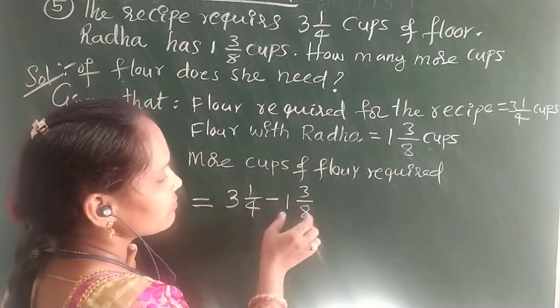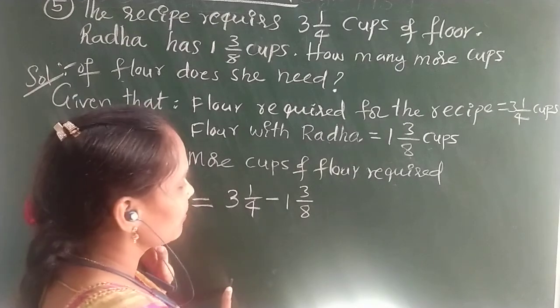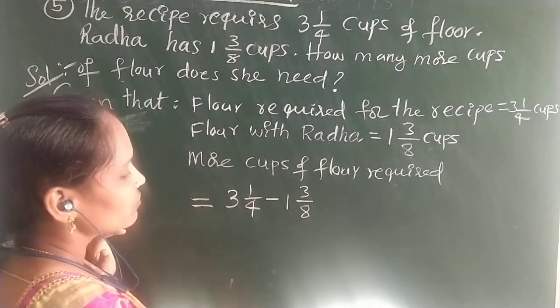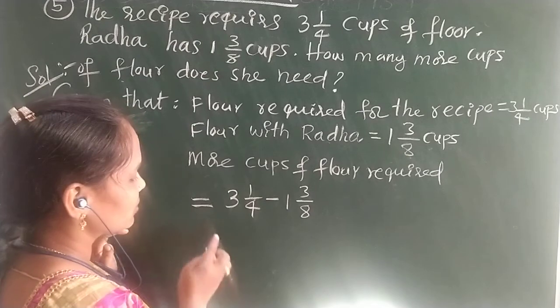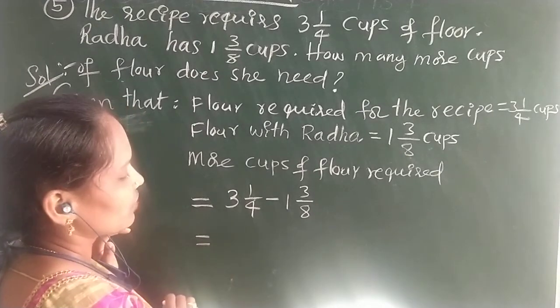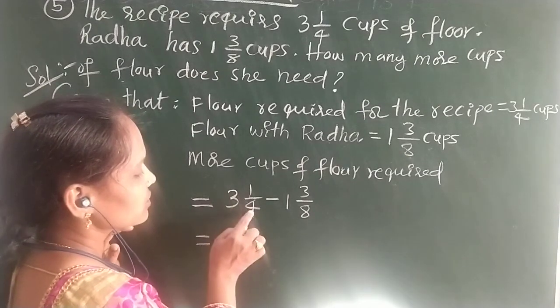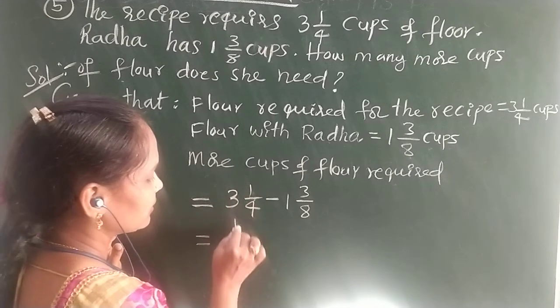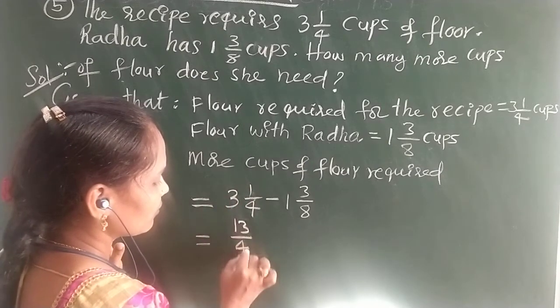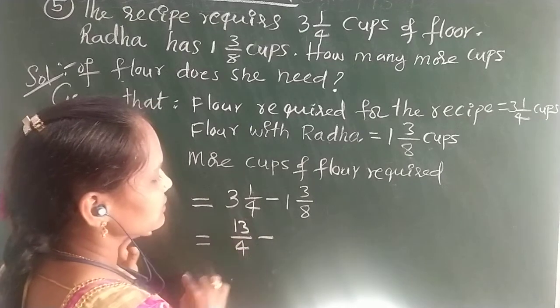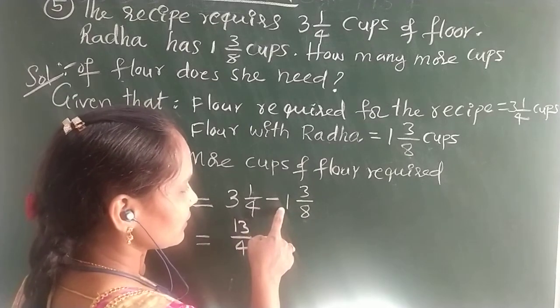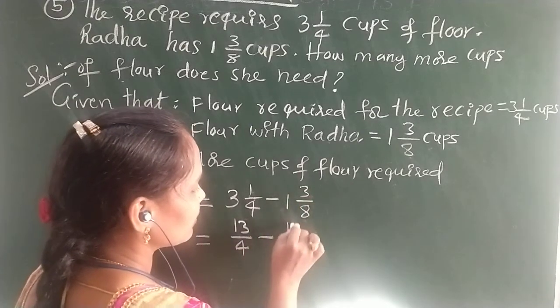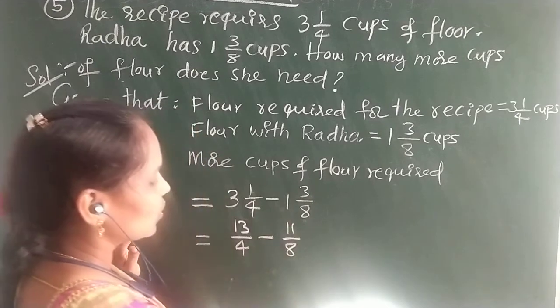Now this is a mixed fraction given. We need to convert this mixed fraction into improper fraction. How we can convert? 3 fours are 12, 12 plus 1, 13. 13/4 minus, here 1 eights are 8, 8 plus 3, 11. 11/8.